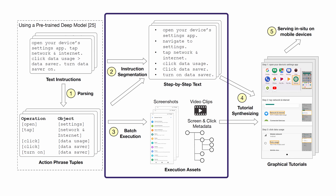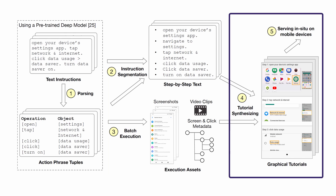The automatic execution of each instruction produces a set of graphical and structural assets, including images, videos, and metadata such as clicked elements for each step. HelpBiz then synthesizes a tutorial by combining parsed text instructions with the generated assets, and contextualizes the tutorial to user interaction by tracking the user's progress and highlighting the next step.